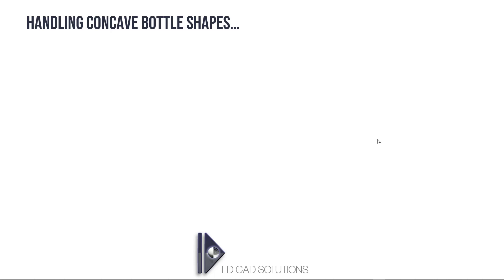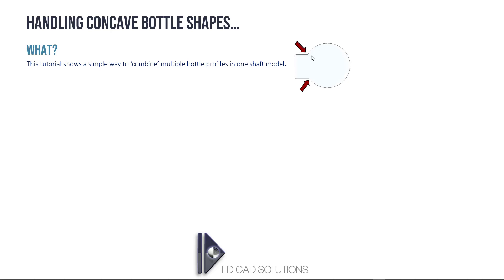Hello, welcome back to another feed scroll generator video for Autodesk Inventor. This time we're looking at how you can handle a specific kind of bottle shape — one where we have a concave area, an indentation or a pocket, some kind of hollow area in the bottle.